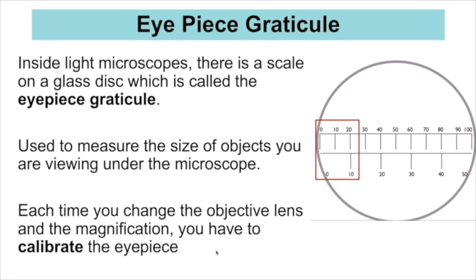Next is the eyepiece graticule and calibrating it. Inside a light microscope in the eyepiece there is a scale on a glass disc — that is the eyepiece graticule. When you look through the microscope you can use that scale to measure the size of the object. However, different lenses cause different magnifications — for example ×10, ×40, ×100 — and at each magnification the value of one division on your eyepiece graticule will be different, so you have to calibrate it at every magnification.